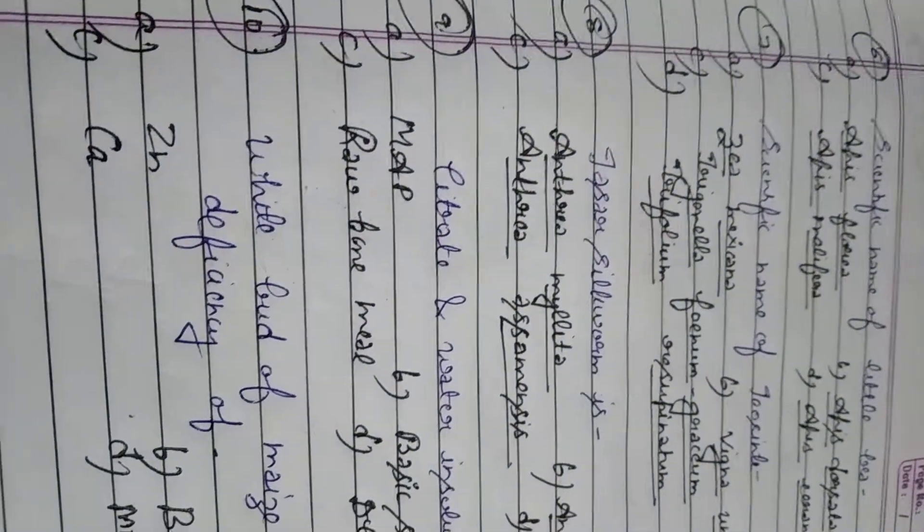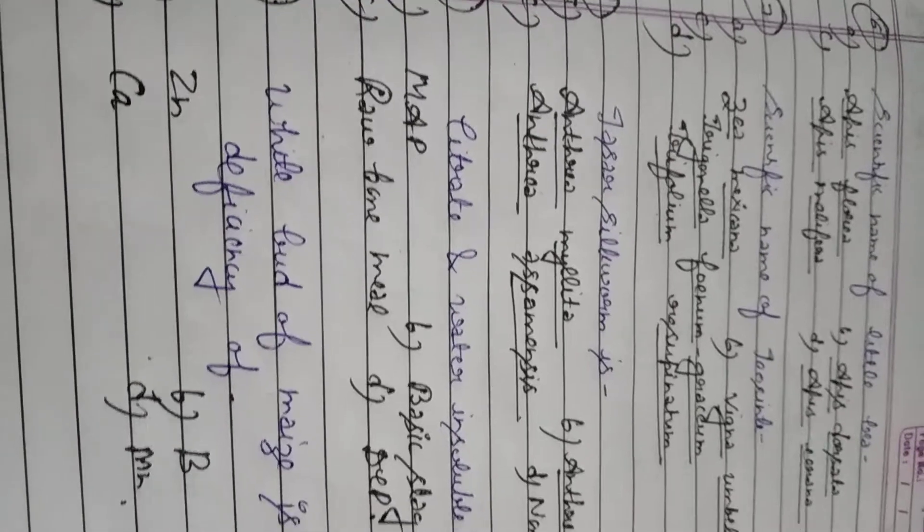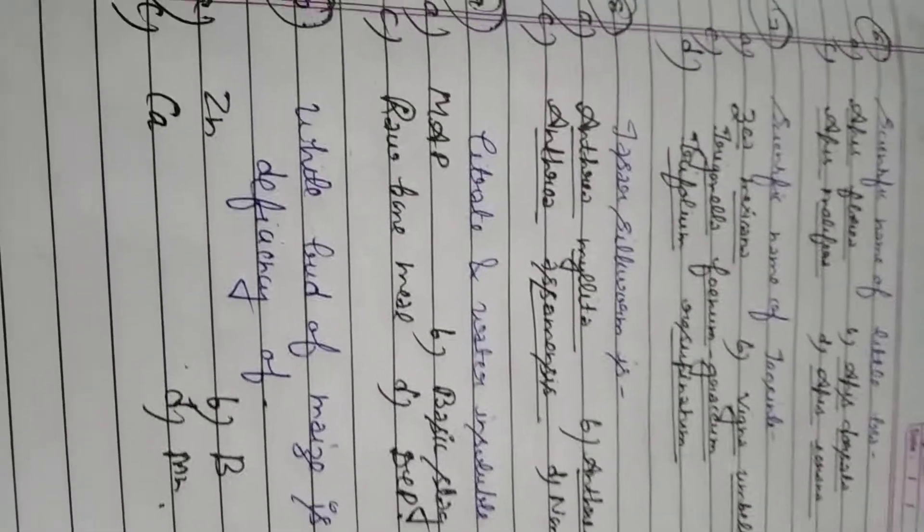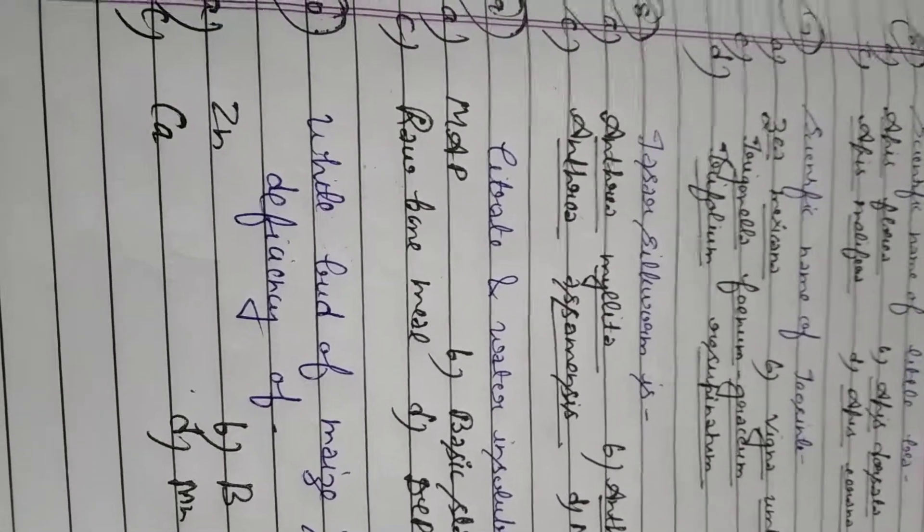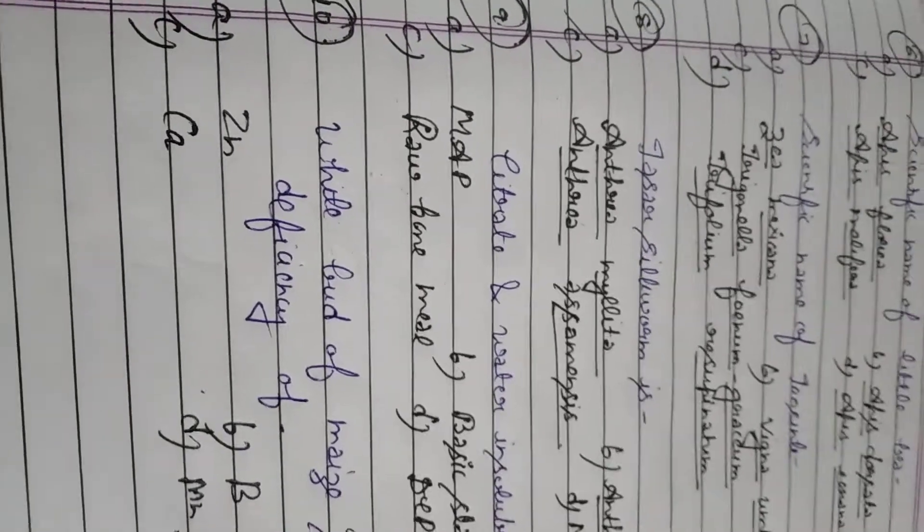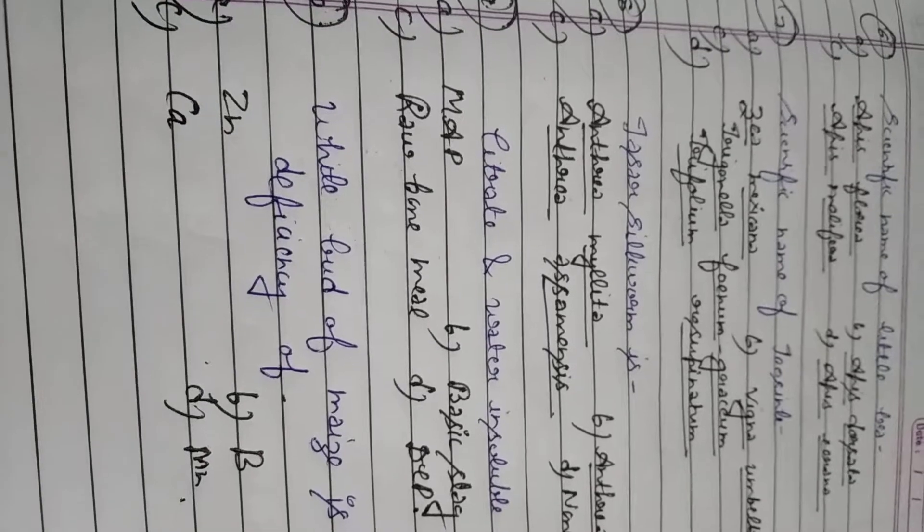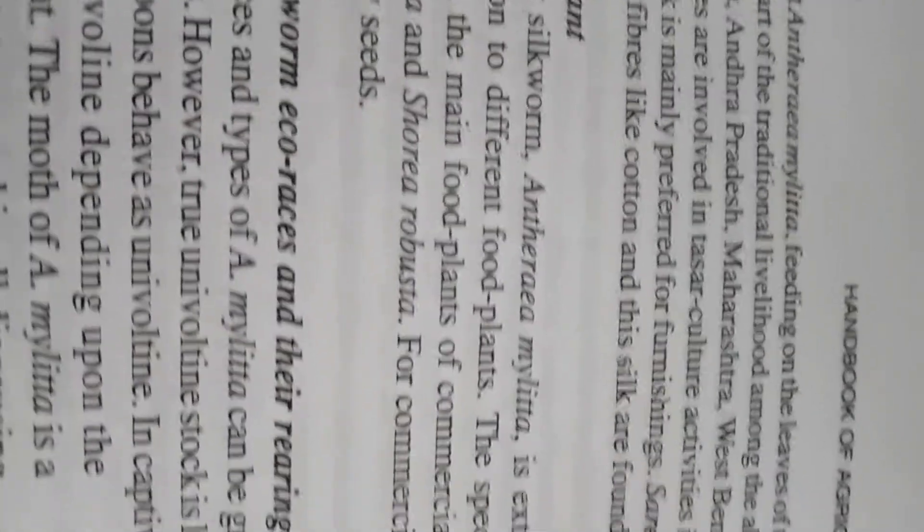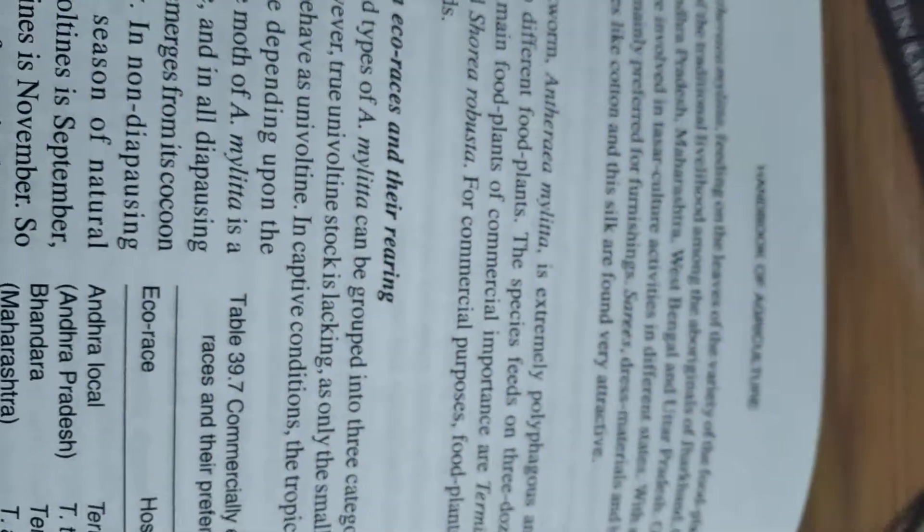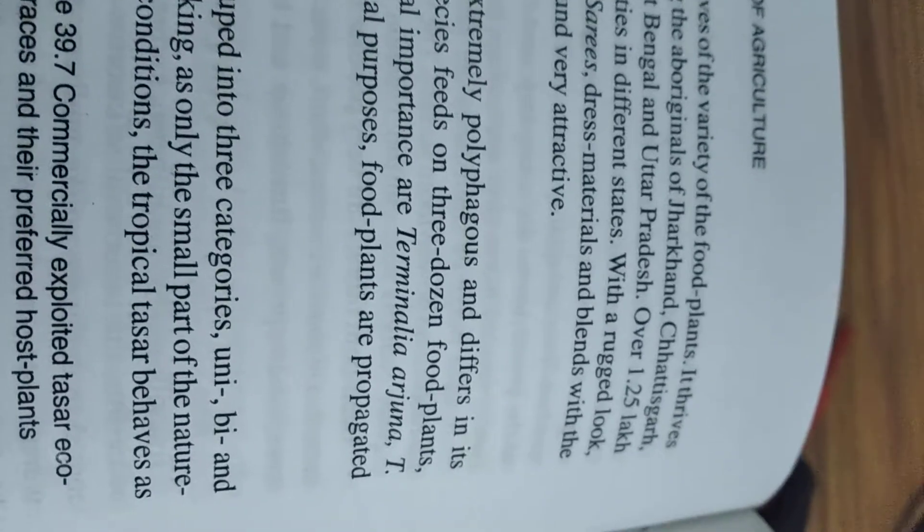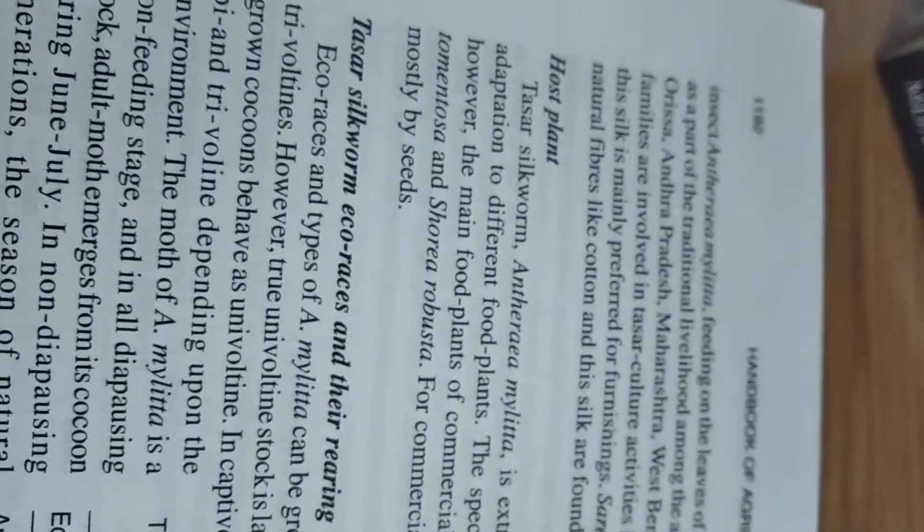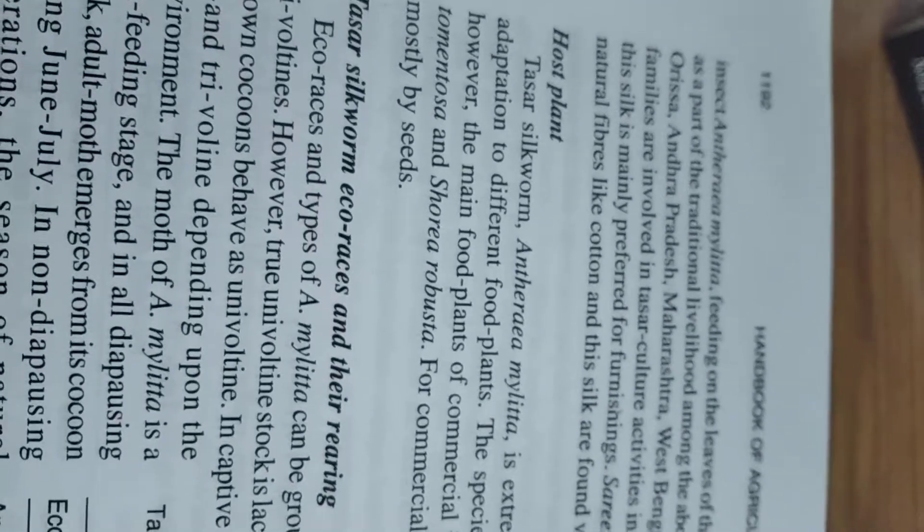Student question number 8. Tassar silkworm is Option A Antheraea mylitta, Option B Antheraea proylei, Option C Antheraea assamensis, Option D none. Student this is again very important question from sericulture. They always ask the botanical name, sorry the scientific name of some of the silkworms. Only the scientific name and their host worms, host trees you remember. So student here it is. Scientific name of tassar silkworm is Antheraea mylitta. Please remember it. And its host plant is Terminalia arjuna, arjun tree. Pandagar students would have seen it. It is near the Badi market. When you go to Badi market all the arjun trees are there. And this is Terminalia tomentosa and Shorea robusta. These are the host plants for tassar silkworm which is Antheraea mylitta.